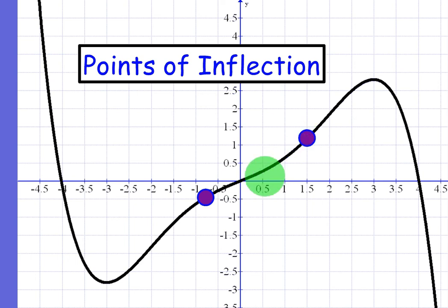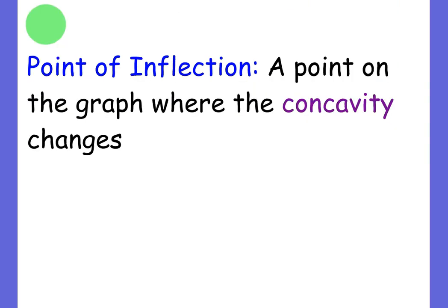And then something else happens. It starts to decrease again. So it goes from concave up to concave down to concave up, and then back to down again. So a point of inflection is a point on the graph where the concavity changes.